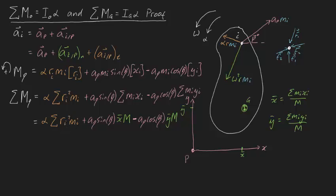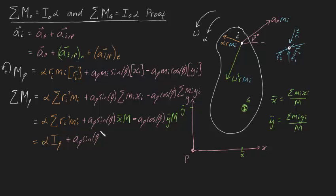The first term, α times the sum of ri²·mi, is actually α times the moment of inertia about point P. So now we can see where the moment of inertia comes from — it was just an arbitrary definition before, but now it's tied directly into the sum of moments. The full expression is: ΣMP = IP·α + AP·sin β·x̄·M − AP·cos β·ȳ·M. It seems like I've proven that the sum of moments about P equals this more complex expression, not just IP·α.